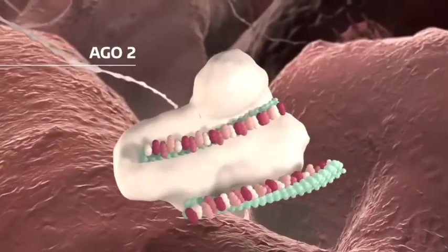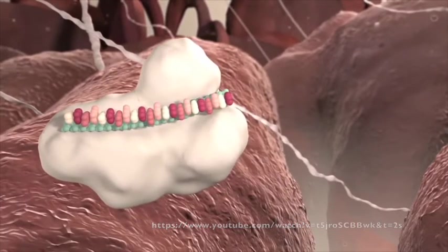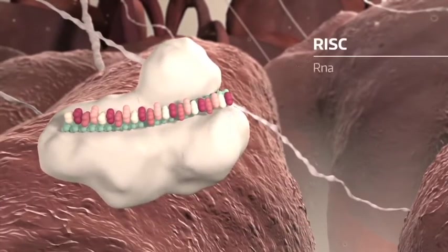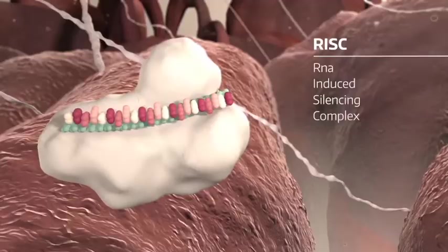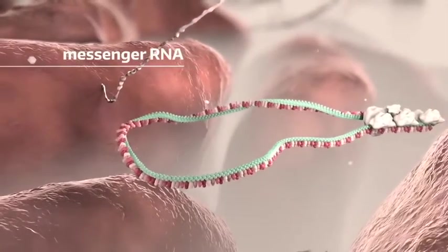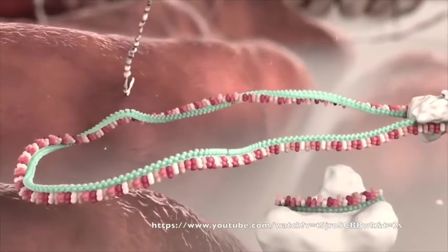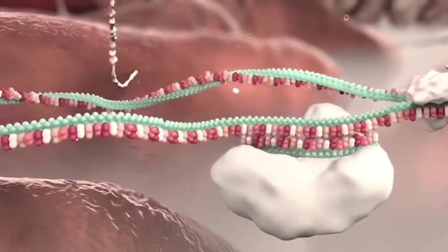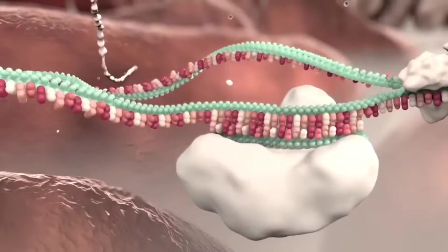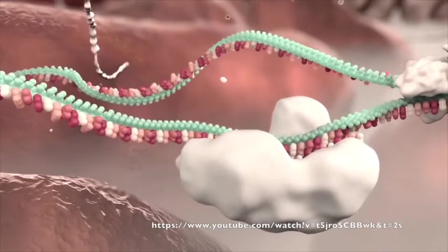This combination of the single-strand microRNA and Ago2 forms the RNA-induced silencing complex, also known as RISC. Once the RISC complex is formed, it is able to undergo its primary function of inactivating messenger RNA. This occurs by base pairing of the microRNA in the RISC complex to specific mRNA strands and then undergoing one of two possible mechanisms.